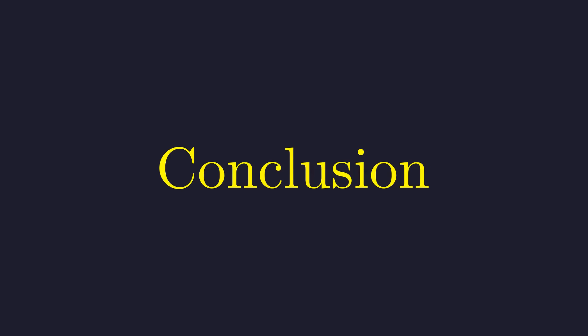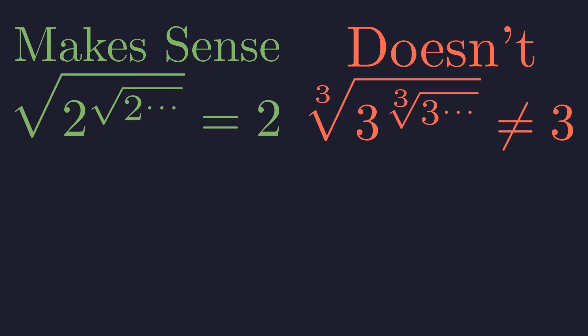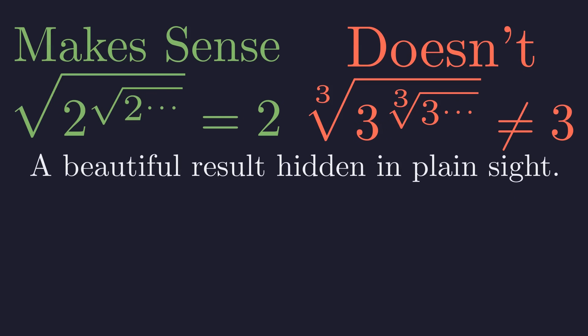Let's revisit our original problem with this newfound understanding. The case with 2's makes sense because 2 is less than e. The iteration is drawn to the stable integer solution. The case with 3's doesn't make sense in the same way because 3 is greater than e. The integer solution is a repulsor, and the true value is a less obvious, non-integer limit. What appeared to be a simple puzzle is in fact a deep statement about the interplay between integers and the fundamental constant e.